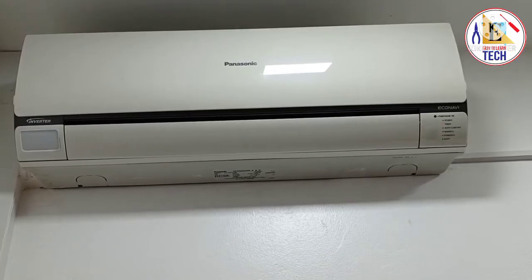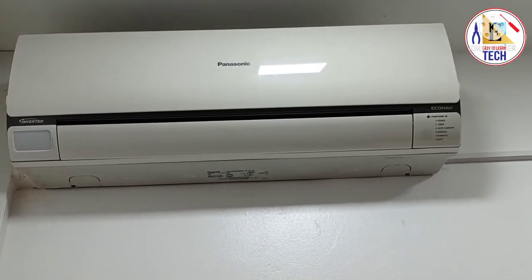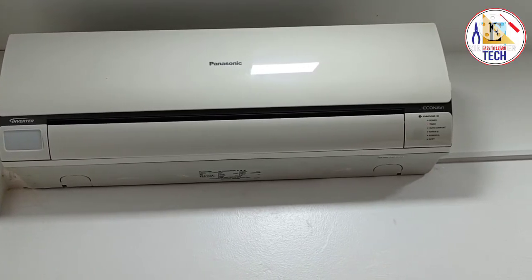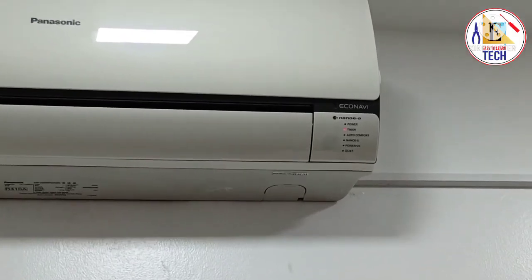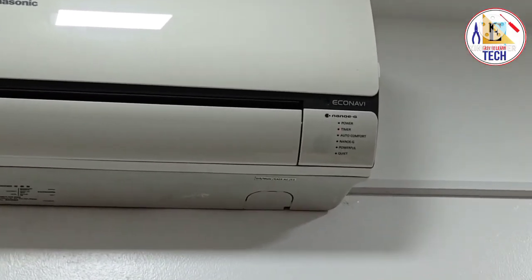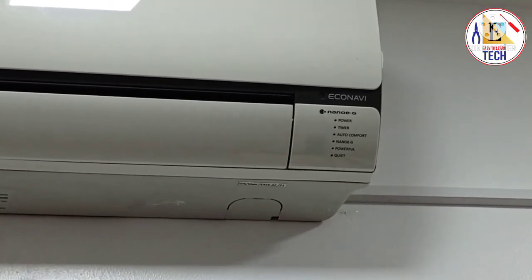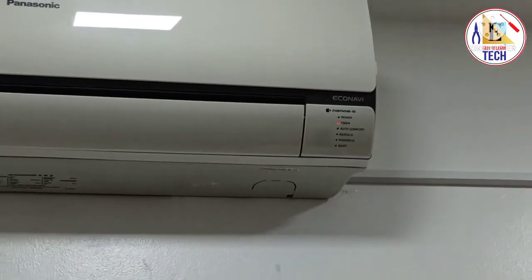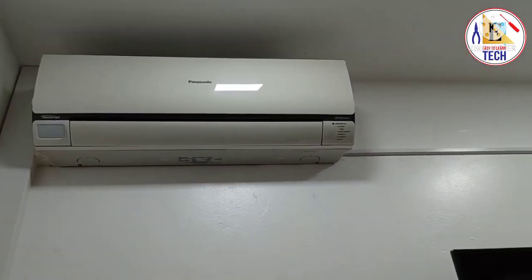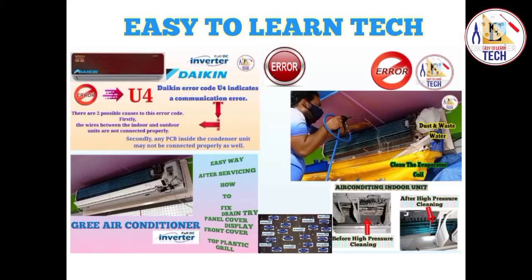Hello friends, welcome back to Easy to Learn Tech. In this video we are going to see how you can find the error code in your Panasonic inverter air conditioning using the remote. As you can see, the timer light is blinking on this Panasonic indoor unit. Watch the video till the last to learn how you can find the error in your remote.